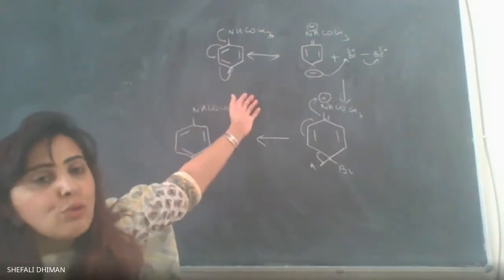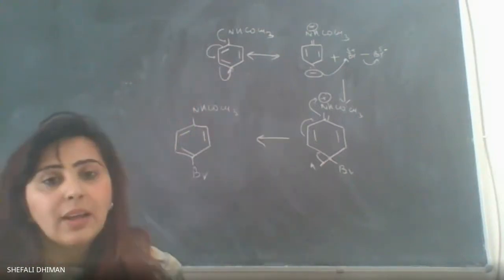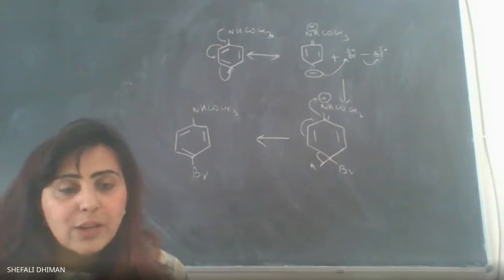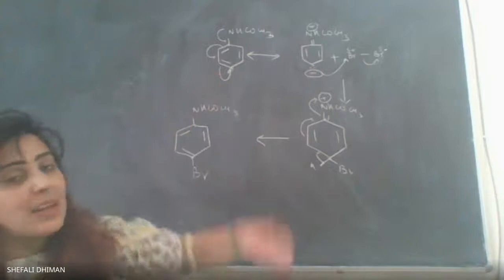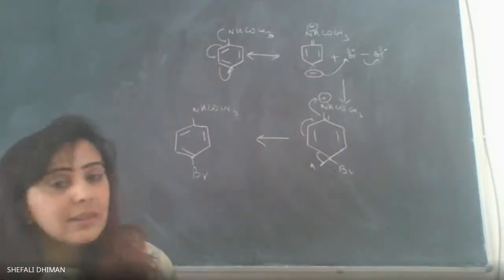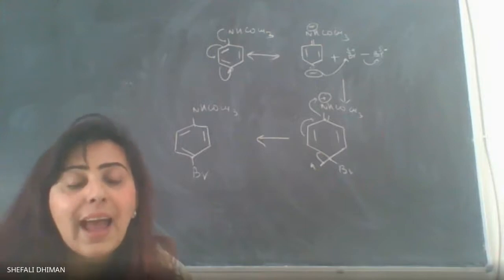NH2 group on benzene would be aniline, OH would be phenol. These NH2 and OH groups are highly activated groups. They're going to activate the benzene ring in such a way that you would end up in bromination at all three positions.